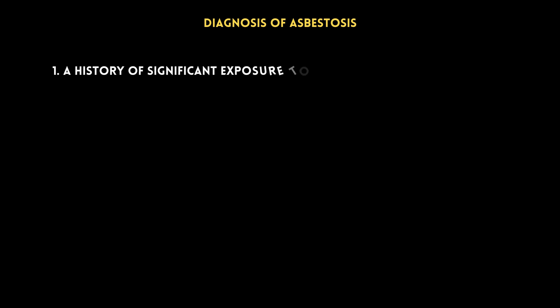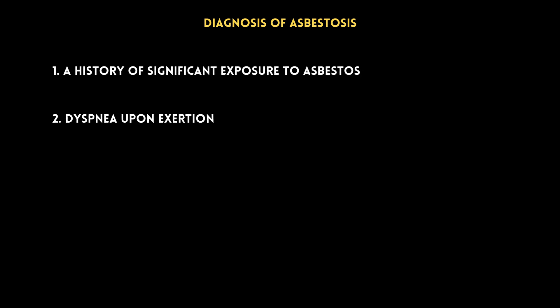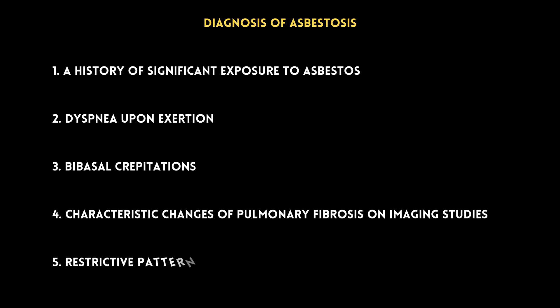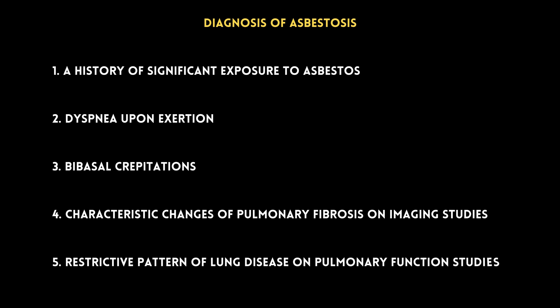A diagnosis of asbestosis can be made with a combination of the following: a history of significant exposure to asbestos, dyspnea upon exertion, bibasal crepitations, characteristic changes of pulmonary fibrosis on imaging studies, and a restrictive pattern of lung disease on pulmonary function studies. It is important to note that these changes must be seen in the absence of other fibrotic diseases that mimic asbestosis.